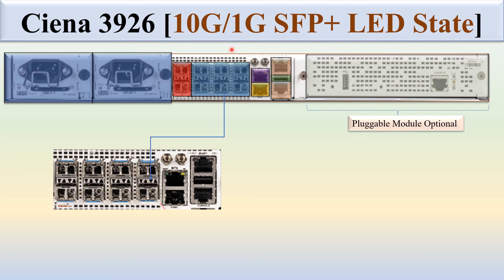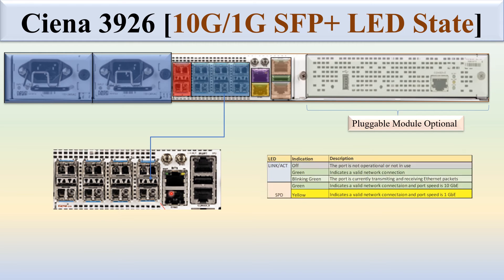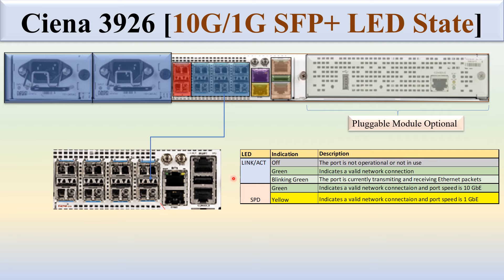Sienna 3926 10G/1G SFP+ LED states. This is the 6-port 10G/1G SFP+ LED port. There are two LEDs: link/act and SPD. If link/act is off, the port is not operational. If green, it indicates a valid network connection. If blinking green, the port is currently transmitting and receiving Ethernet packets. If SPD is green, it indicates a valid network connection and the port speed is 10GB. If yellow, it indicates a valid network connection but the port speed is 1GB.